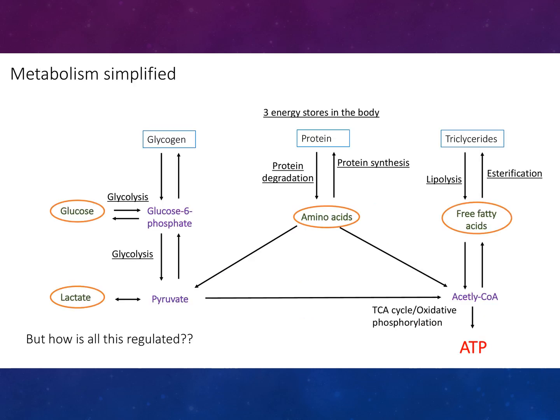Looking at metabolism simplified, there are three energy stores in the body: glycogen, glucose-6-phosphate, and pyruvate, which can be converted to lactate via glycolysis. Glucose goes to glucose-6-phosphate through glycolysis. Proteins undergo degradation or synthesis involving amino acids. Free fatty acids go through esterification to acetyl-CoA, ultimately resulting in ATP production.